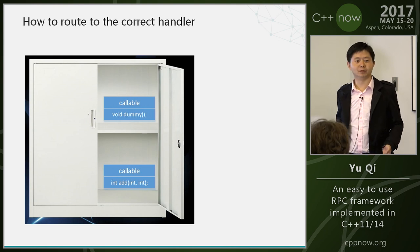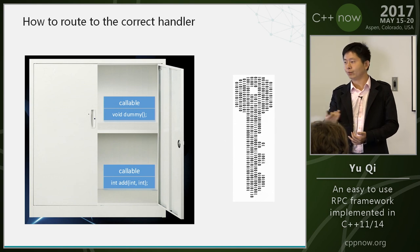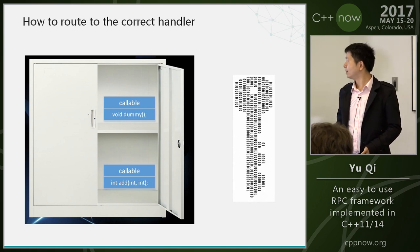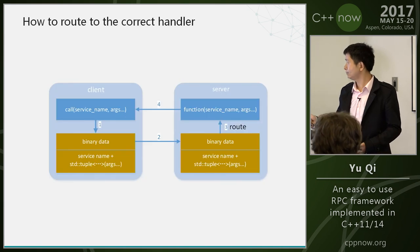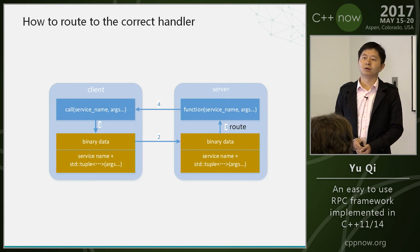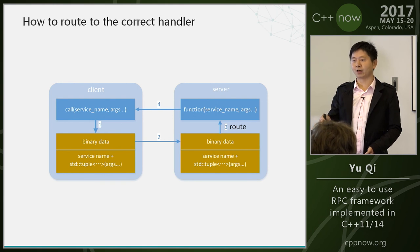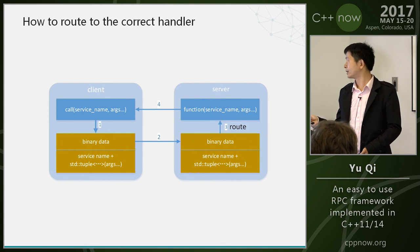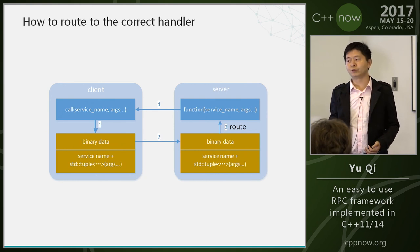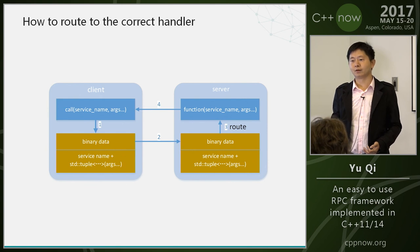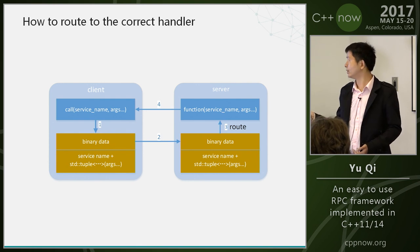You need a key, and the key is made of binary data because the input to the server is binary data. Here is my way to route to the right handler: when the client calls the RPC service, I put the real arguments into a tuple and serialize the tuple into binary data. The server deserializes the binary data into a tuple, then you can use std::apply to call the real function.